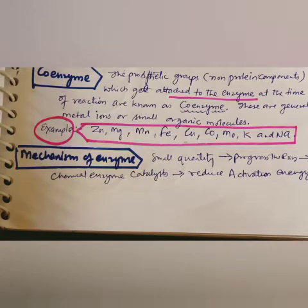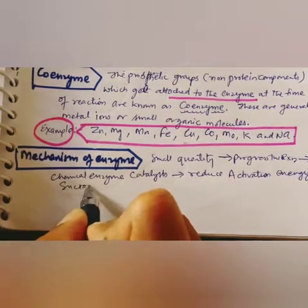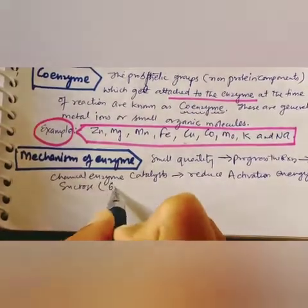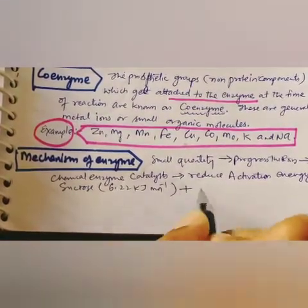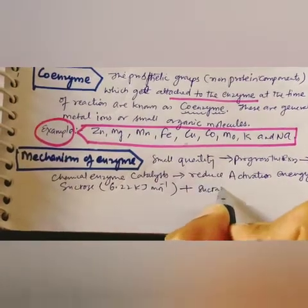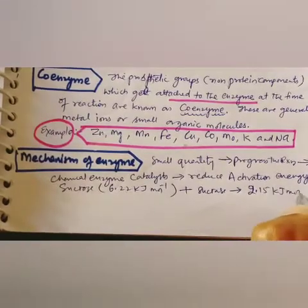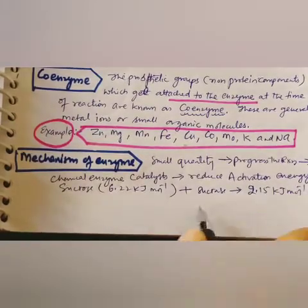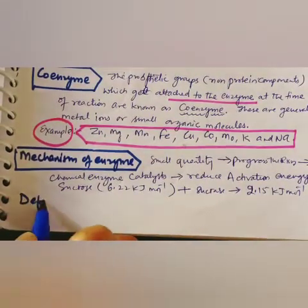When sucrose is hydrolyzed by the enzyme sucrase, the activation energy drops to only 2.15 kJ/mol inverse. This reduction in activation energy makes the rate of reaction significantly faster.